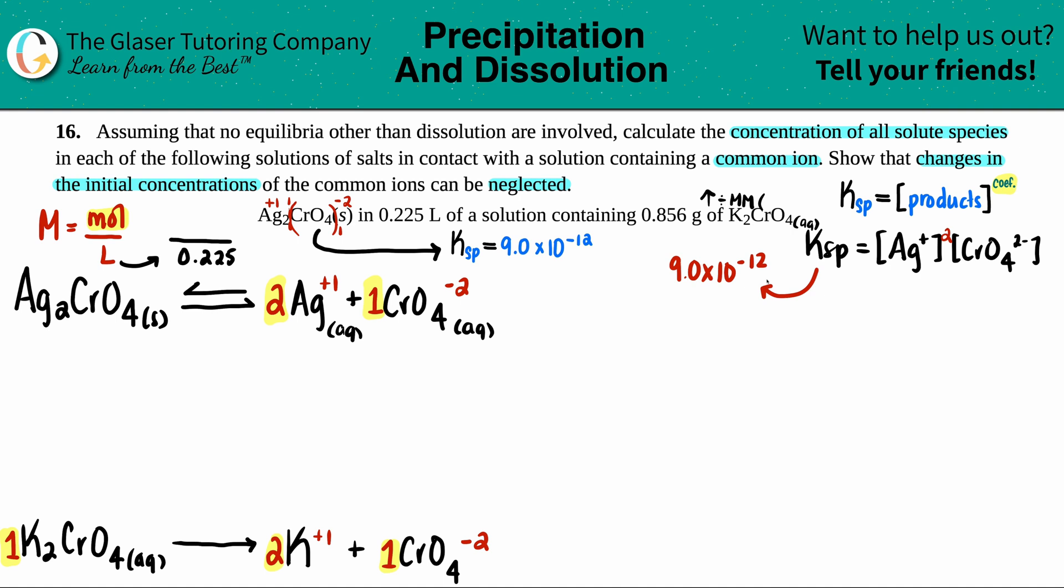Going to my periodic table to find out what K2CrO4 is: 39.1 times 2 plus chromium at 52 plus 4 times 16 equals 194.2 grams per mole. If I take 0.856 and divide it by 194.2, I get my mole value.